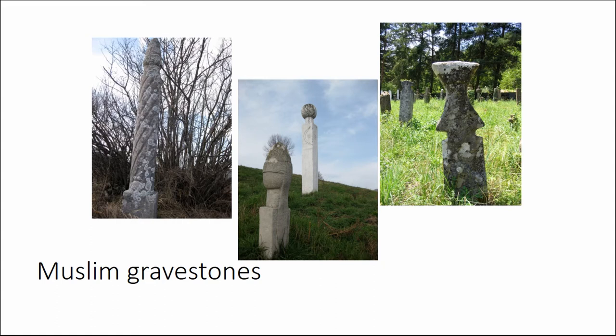In some cases we have a turban, but in many cases we don't even have that. So in this early period we have essentially just the transposition from horizontal to vertical. In terms of Catholic tombstones, likewise, there is actually a tombstone very similar to those found among the Muslims — there is very little that becomes visibly identifiable in this early period.